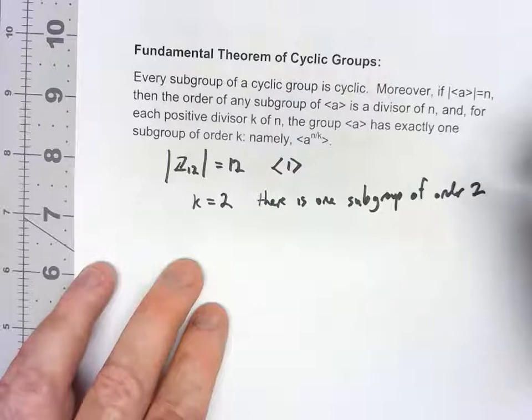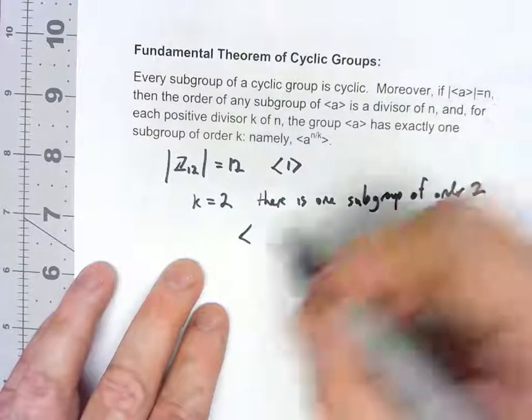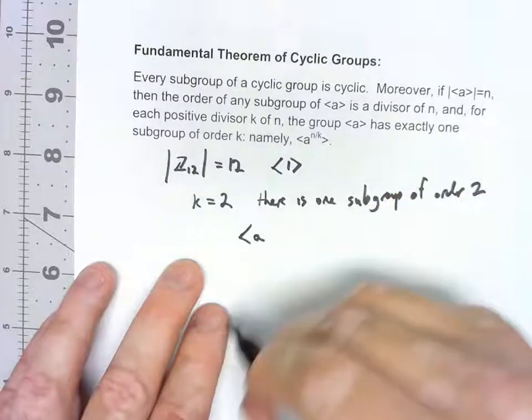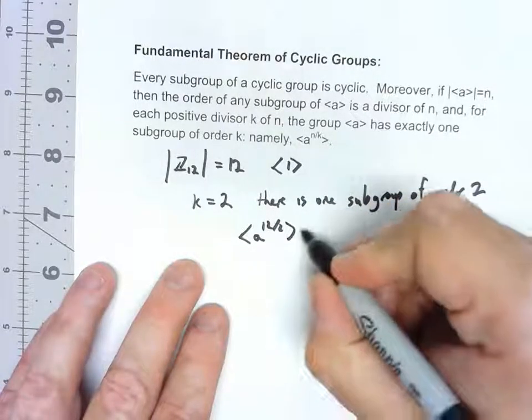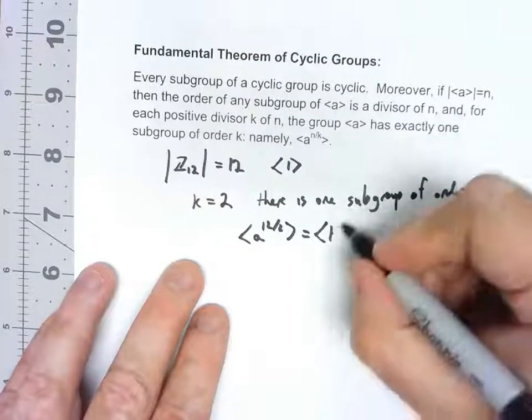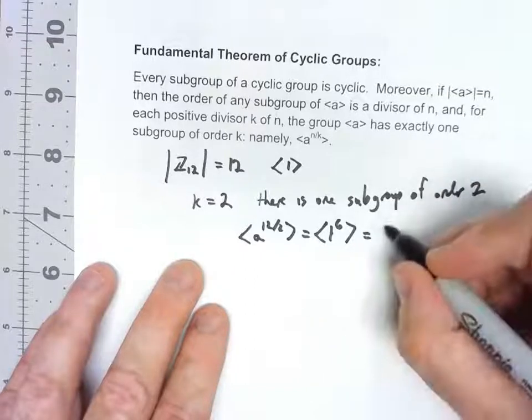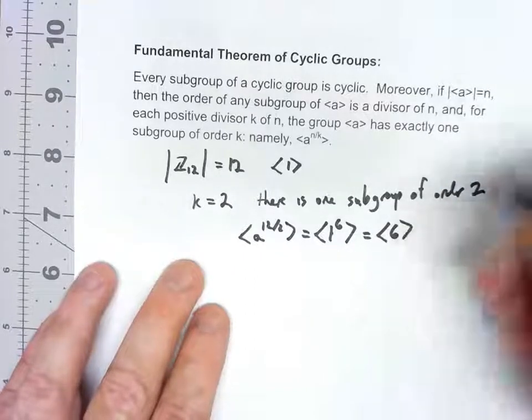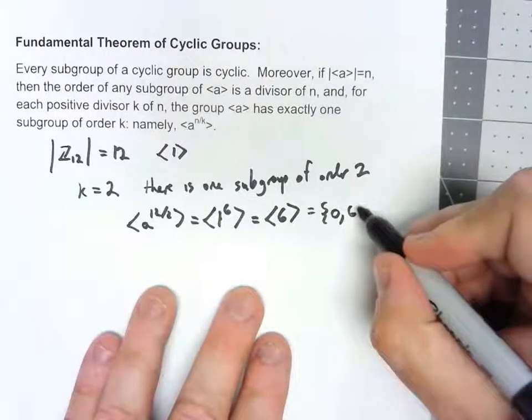And that subgroup is the subgroup generated by a to the 12 over 2. So group generated by 1 to the 6th, which is subgroup generated by 6, which would be the set 0 and 6.